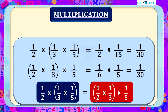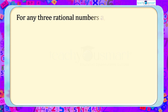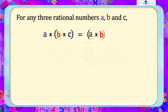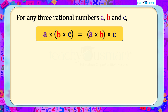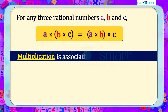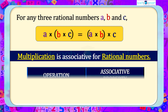As we saw with addition, the results are the same regardless of the grouping. In general, for any three rational numbers a, b, and c: (a × b) × c = a × (b × c). Therefore, multiplication is associative for rational numbers.